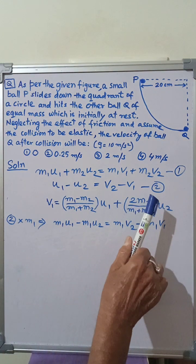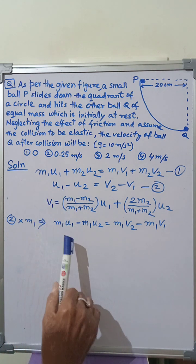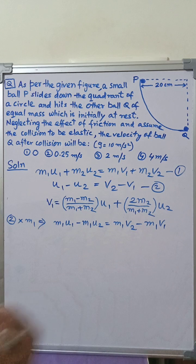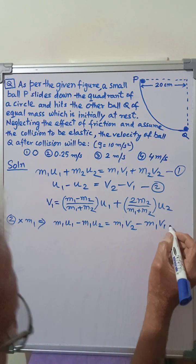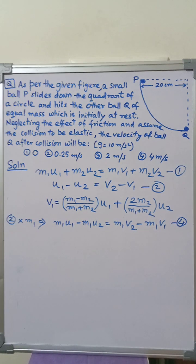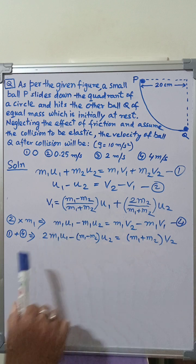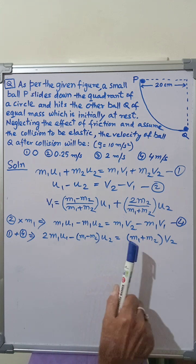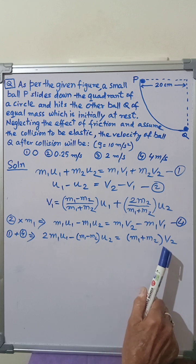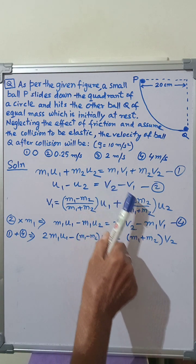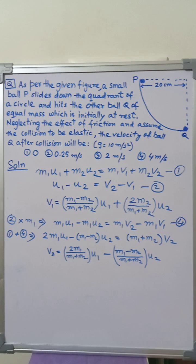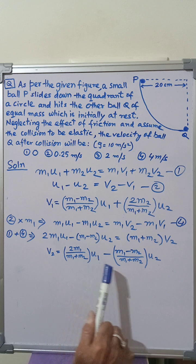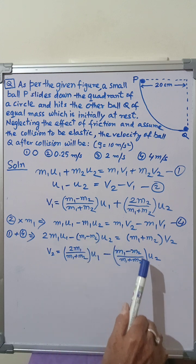Now, multiplying equation 2 by M1, we get M1·U1 − M1·U2 = M1·V2 − M1·V1. We mark this as equation 4. Adding equations 1 and 4, we get 2M1·U1 + (M1 − M2)·U2 = (M1 + M2)·V2, since the M1·V1 terms cancel. From this, V2 = [2M1/(M1 + M2)]·U1 − [(M1 − M2)/(M1 + M2)]·U2.